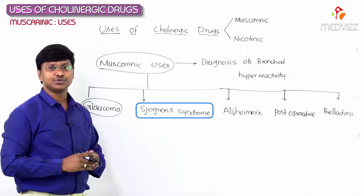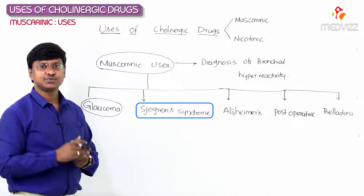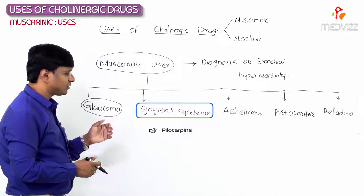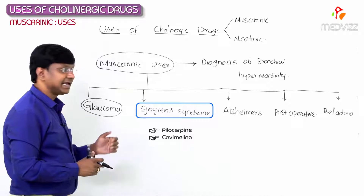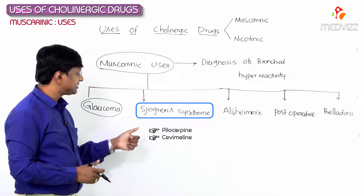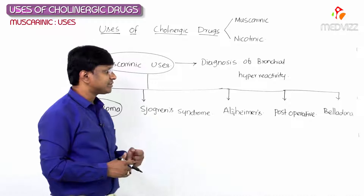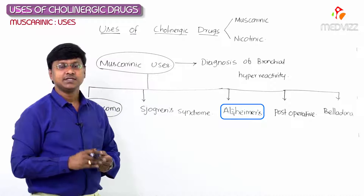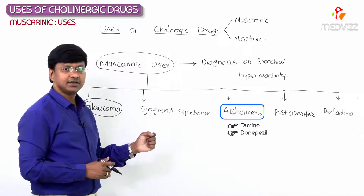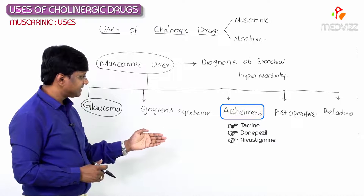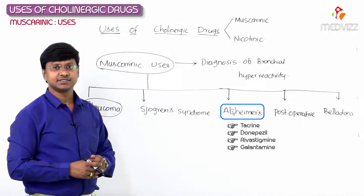For Sjögren's syndrome, to increase salivary and lacrimal secretions, the drugs used are pilocarpine and cevimeline. For Alzheimer's disease — dementia in elderly individuals — the drugs used are tacrine, donepezil, rivastigmine, and galantamine.